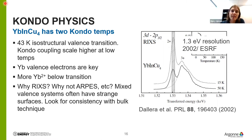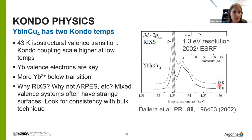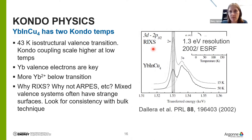Ytterbium indium copper has two Kondo temperatures. At 43 Kelvin there's some kind of valence transition, and at low temperature there's a much higher Kondo coupling. In 2002, ESRF did a measurement at 1.3 eV resolution and saw a very exciting result — measuring ytterbium emission above and below the transition temperature showed a big change in the spectra. The interpretation is that there's a lot more Ytterbium 2+ below the transition. This is the type of measurement done at Sector 20. The reason to do RICS rather than ARPES is that ARPES is very surface sensitive, and mixed-valence systems often have electronic reconstructions at the surface, so you want a bulk technique like RICS for consistency.